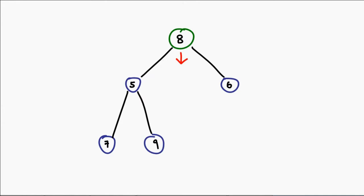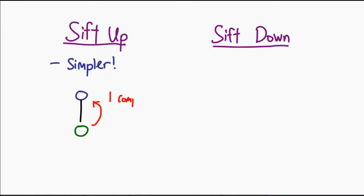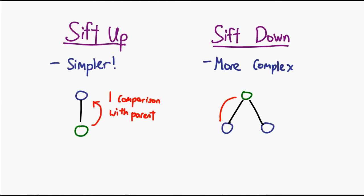To do that, we make use of an operation called sift down. We've looked at sift up last time, where an item moves up — now we're going to do the exact opposite, and that is to sift it downwards. Remember that sift up is a very simple operation: every node simply needs to look at its parent and perform a comparison with that. Sifting down is a little bit harder, because now you have to compare yourself against two different elements — that being the left and the right children.